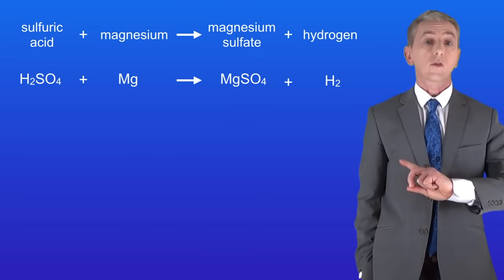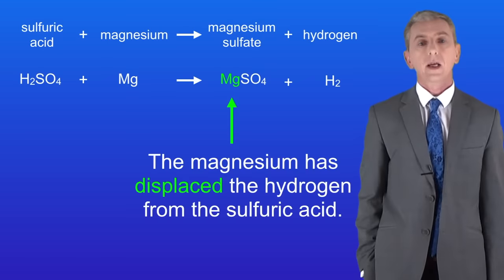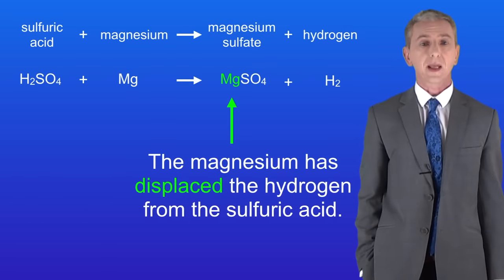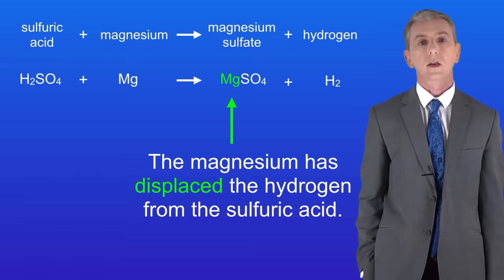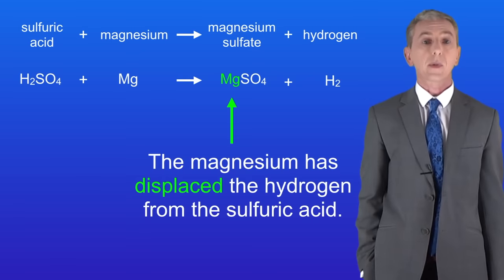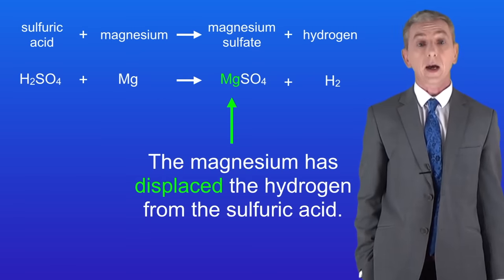This shows the reaction between sulfuric acid and magnesium. As you can see the magnesium has displaced or pushed out the hydrogen from the sulfuric acid. So in this reaction we've made magnesium sulfate and hydrogen gas.